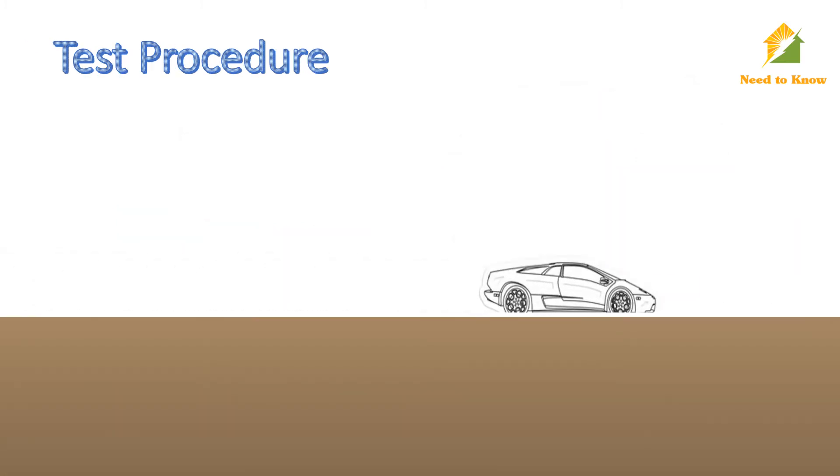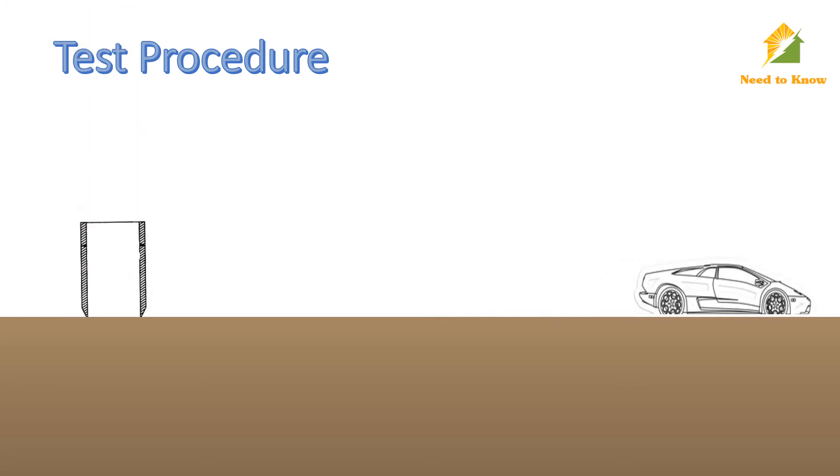Now come to the site where soil compaction is to be determined. Clean some portion on the ground, level it, and place the core cutter assembly perfectly vertical. Now penetrate it using the rammer.